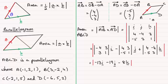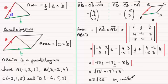And expanding that gives us the magnitude of -13i - 19j - 8k. And then to work out the magnitude, that's going to be the square root of the sum of the square of the components: 13 squared plus 19 squared plus 8 squared. And that comes to 3 root 66.